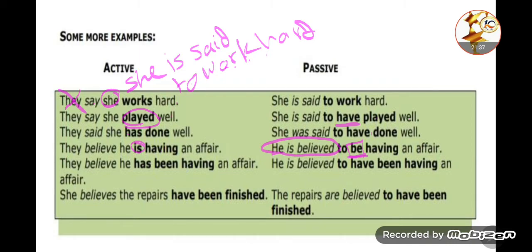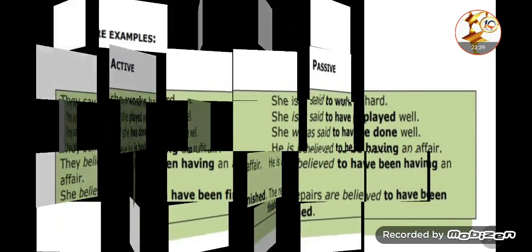'They believe he has been having an affair' becomes 'He is believed to have been having an affair.' Since 'has been having' is present perfect continuous, we use 'to have been + verb-ing'. Another example: 'She believes the repairs have been finished' becomes 'The repairs are believed to have been finished' — we take 'the repairs' as subject, and 'have been finished' becomes 'to have been finished.'